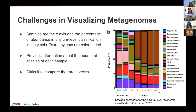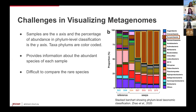Looking at the bar chart here, we can see that it provides information about the abundant species — we see that Euryarchaeota is most abundant in these seep samples. However, it gets confusing to compare the rare species because of the stacked nature of the plot.